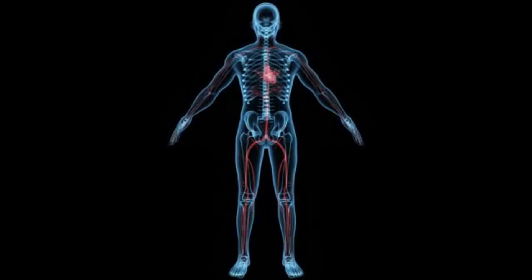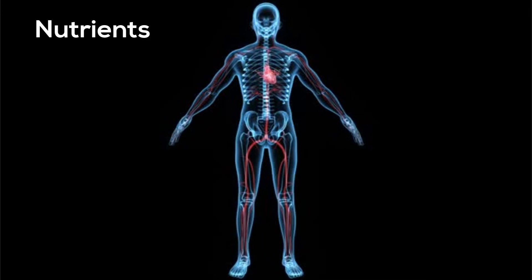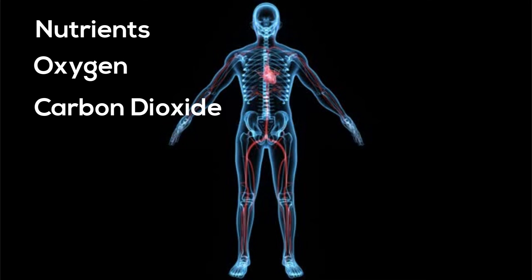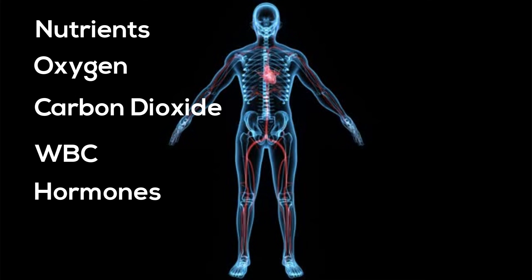In summary, the job of the circulatory system is to circulate blood to and from the cells in the body in order to transport nutrients, oxygen, carbon dioxide, white blood cells, and hormones to and from each cell.